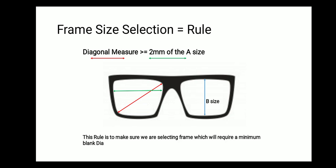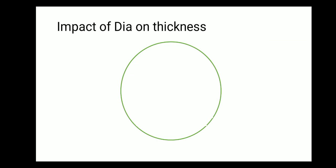The B size is the depth of the frame. Now let us see what is the impact of diameter on thickness. Consider a plus lens power — if I have to make a 60 mm diameter lens, the center thickness and the sagittal depth are represented by the blue-headed arrow shown here. Now if I end up selecting a bigger frame, say I need a 70 mm diameter lens, you can see from the red line that as the diameter increases, the sagittal depth increases and the center thickness of the lens increases.